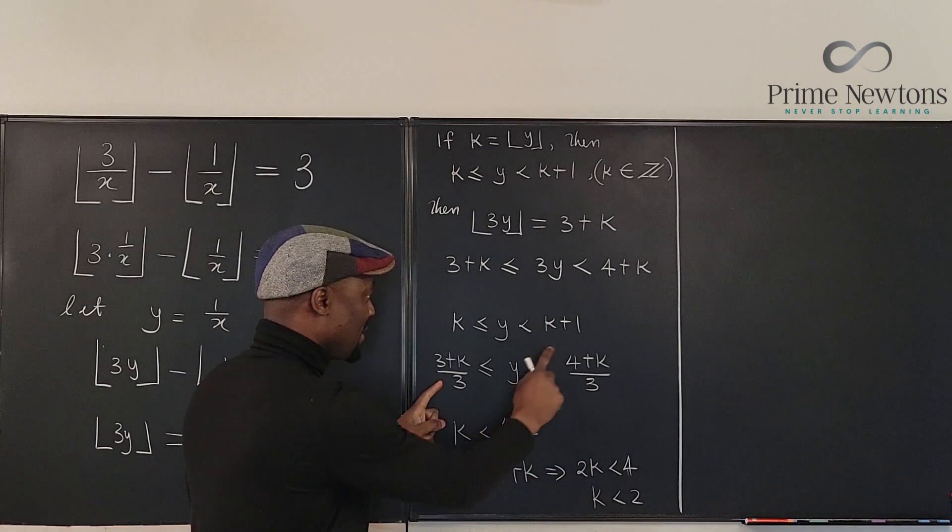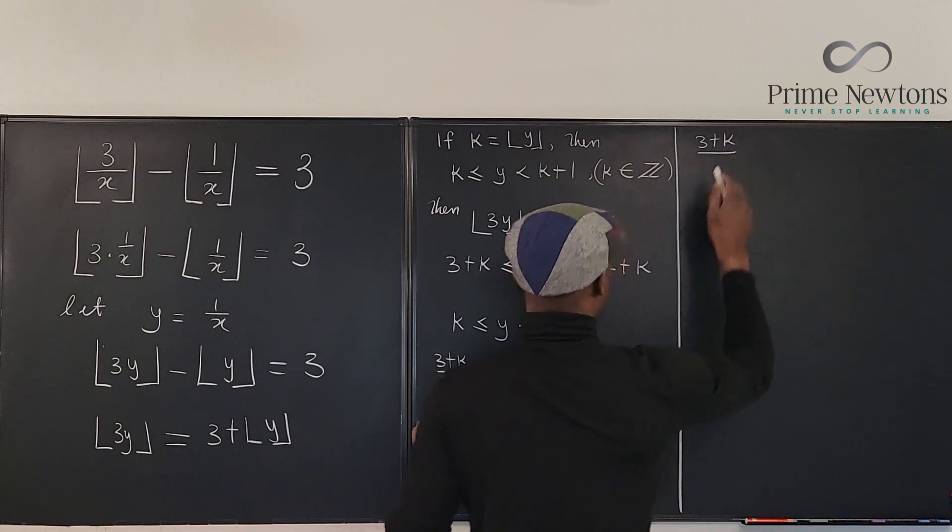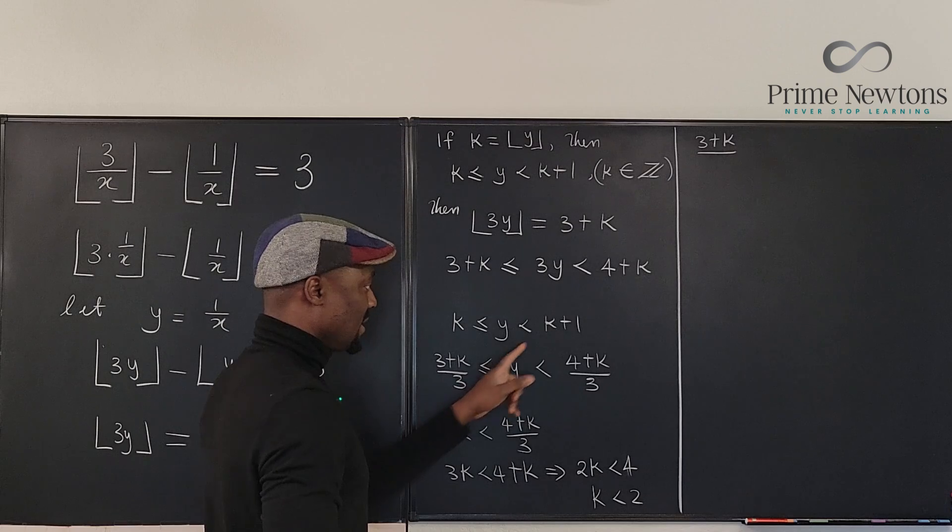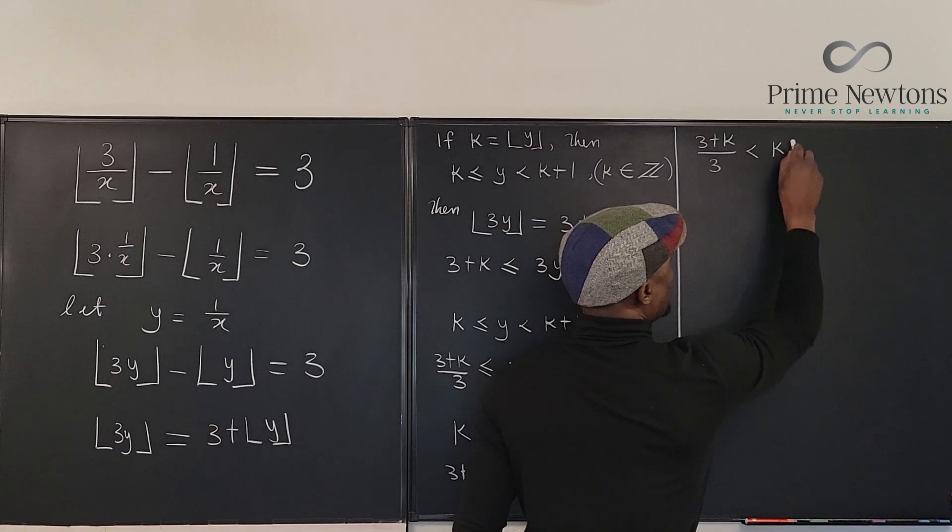Okay, so we'll connect these two. We say that 3 plus k divided by 3 is less than k plus 1.